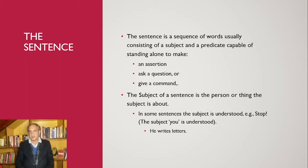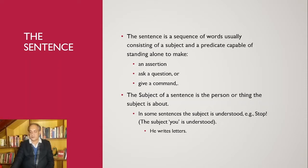A predicate would normally include one subject and one predicate. The subject and predicate include the verb and the object. The subject of a sentence is the person or thing the sentence is about. In some sentences, the subject is primarily implicit — it is understood, it is not written.